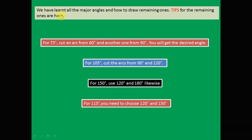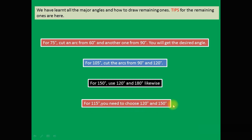We have now learned all the major angles and how to draw the remaining ones. Tips for the remaining angles: for 75 degrees, cut an arc from 60 degrees and another from 90 degrees to get the desired angle. For 105 degrees, cut arcs from 90 degrees and 120 degrees. For 150 degrees, use 120 degrees and 180 degrees likewise. For 115 degrees, choose 120 degrees and 150 degrees.